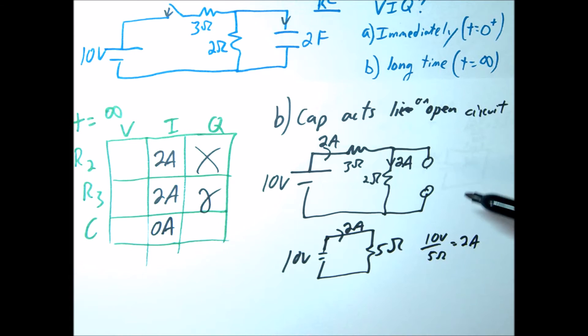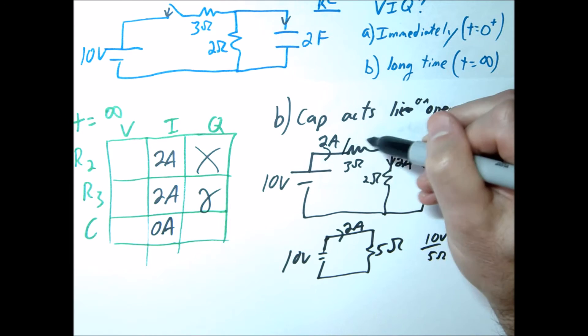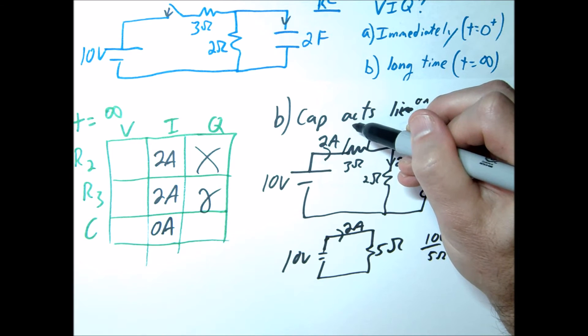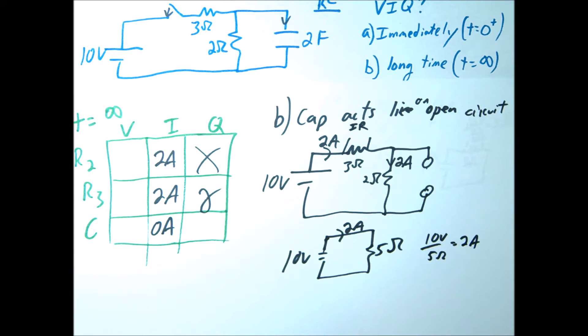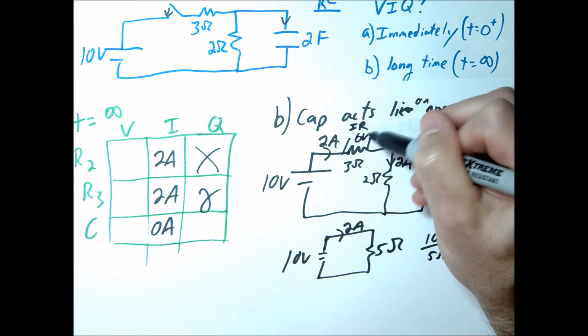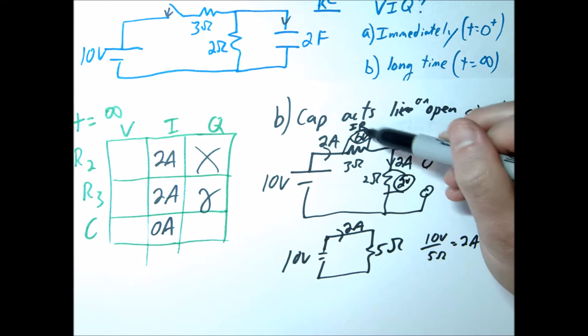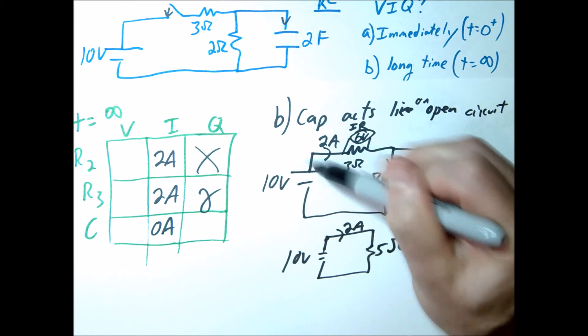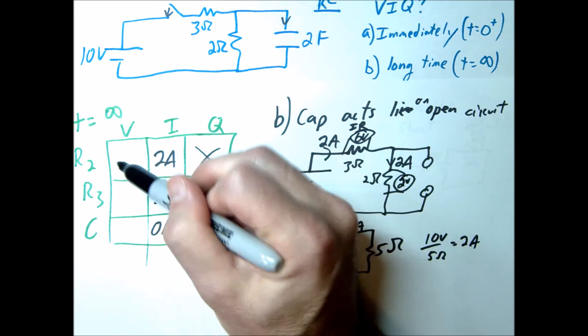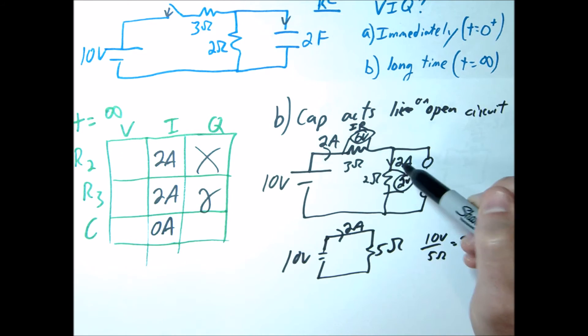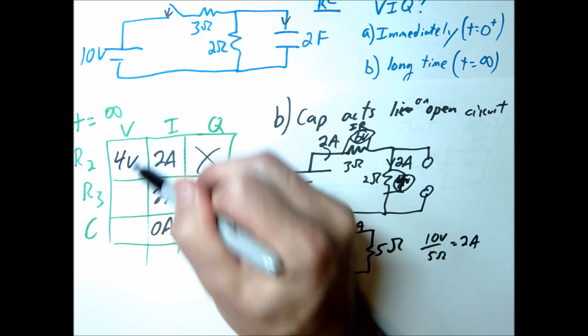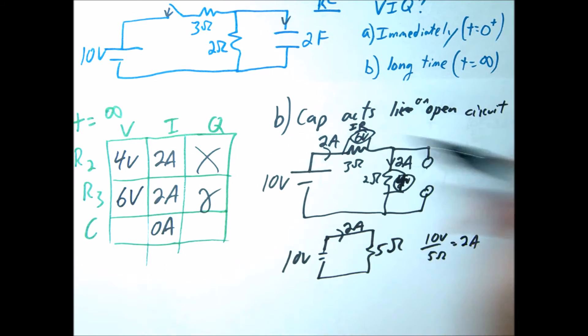Let's go ahead and find the voltage. If this is 2 amps, 3 ohms, this is going to be V equals IR, which is going to be 2 times 3. So it's going to be 6 volts across this. Same thing over here. We're going to go V equals IR, 2 ohms times 2 amps equals 4 volts across here. And you can do the check, 6 plus 4 should add up to our total that we started with. So this is going to be 4 volts. This is going to be 6 volts.